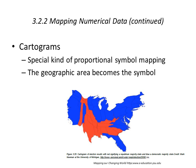A cartogram is a special kind of proportional symbol map where the geographic area becomes a symbol. Here you're looking at the results of the 2008 presidential election where the electoral college vote by state has been used to symbolize the share of the area of each state. And that concludes the section on thematic mapping. Next, we'll talk about data classification.